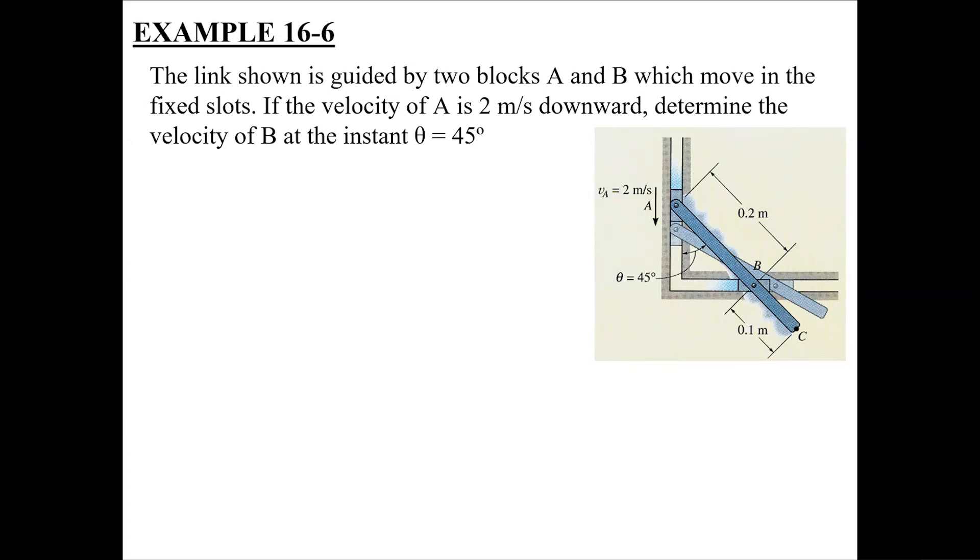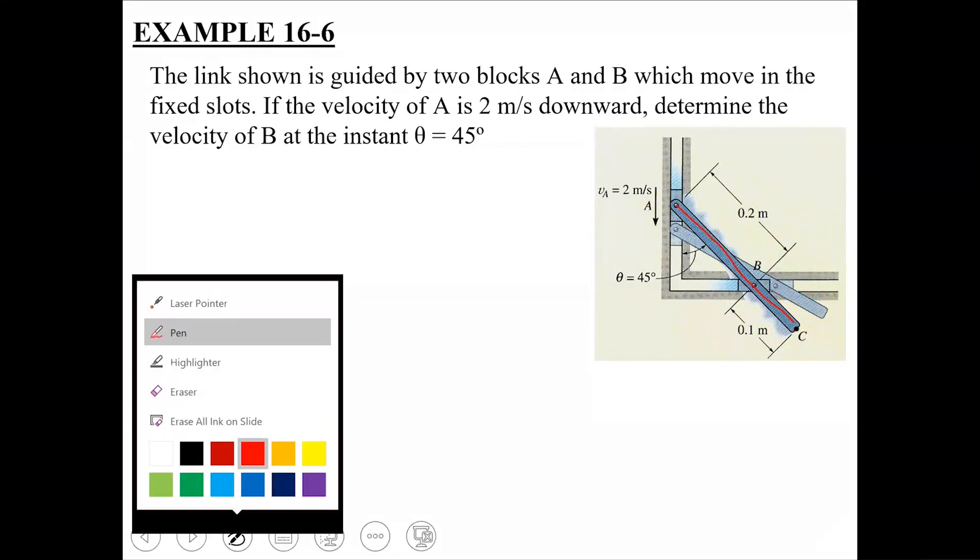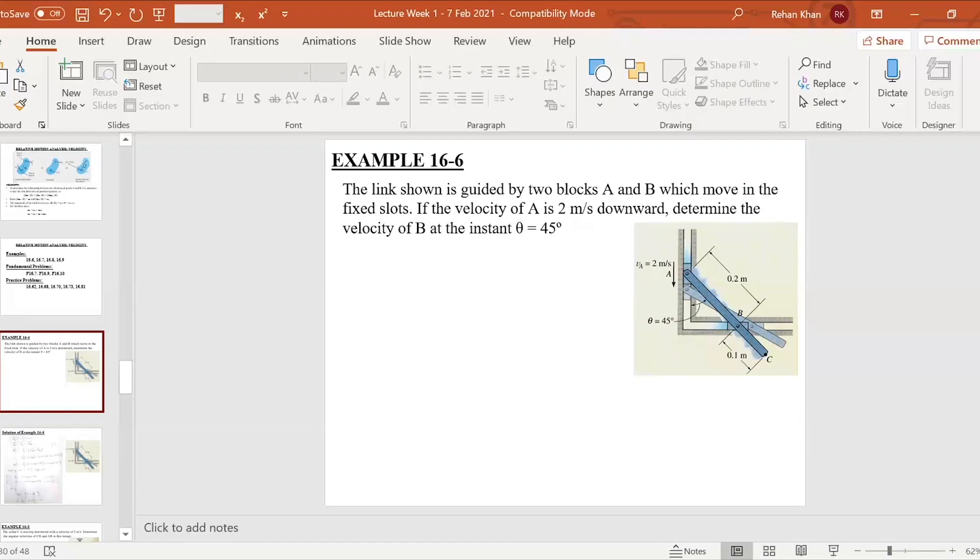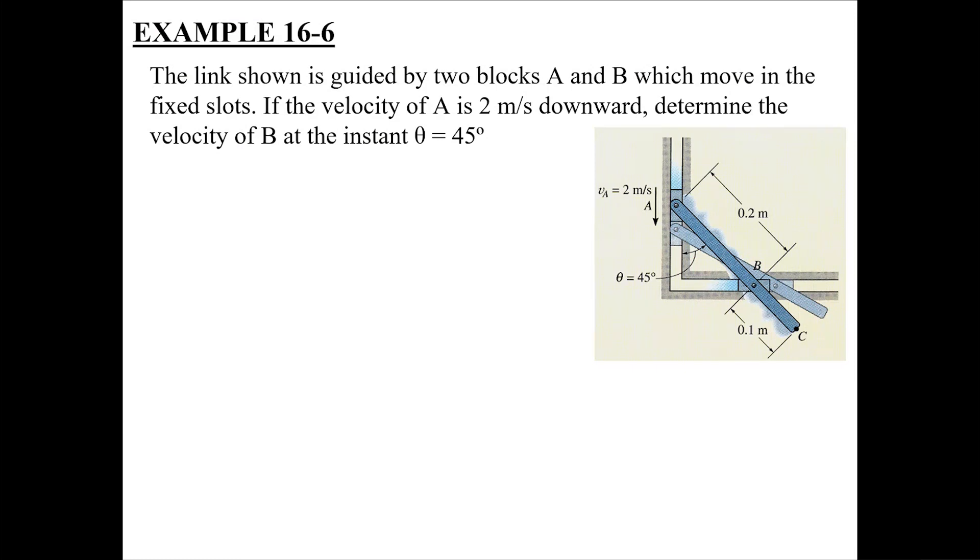The rigid link is undergoing simultaneous translation and rotation, that is general plane motion. So basically you are going to apply that relative velocity equation on this link ABC. Is this point clear to all of you?